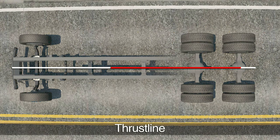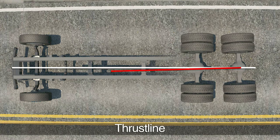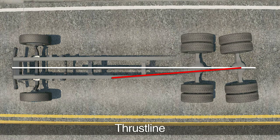Thrustline — the bisector of the toe in the axle — is basically the direction the wheels on that axle are pointed. Thrust angle is the angle formed by the thrustline and the geometric centerline.